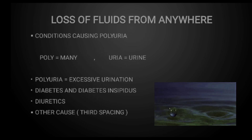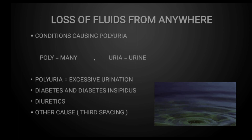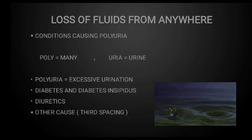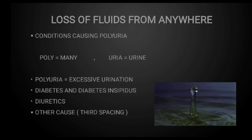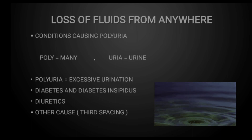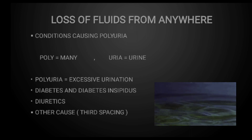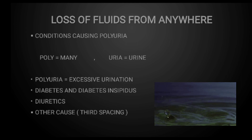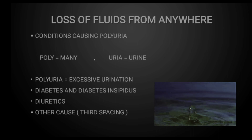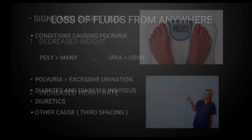Hypovolemia can also be caused by any condition that causes polyuria. Breaking the word down: poly means many and uria means urine, so this is excessive urination. Conditions such as diabetes and diabetes insipidus cause polyuria, and medications such as diuretics also cause polyuria. Another condition is third spacing — you can see this in burn patients and ascites patients. Third spacing is when fluid shifts from the intravascular space into the interstitial space, causing a drop in circulating volume and hypovolemia.